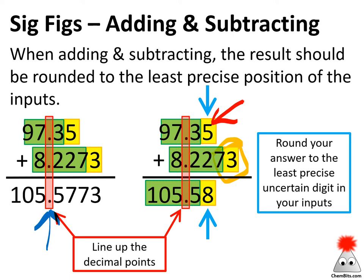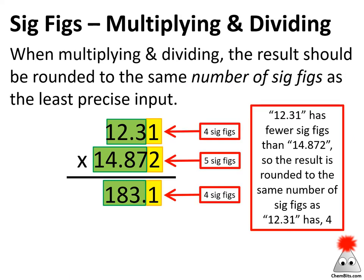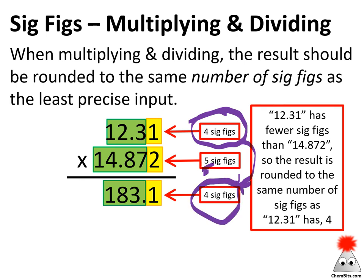What happens if we multiply and divide? In some ways, multiplying and dividing is a little easier rule: when we're multiplying and dividing, we round our result to the same number of sig figs as the least sig fig input. So I've got four sig figs as the smallest number — four is smaller than five — so I better round that result to four sig figs.